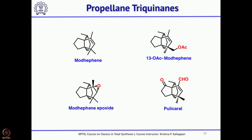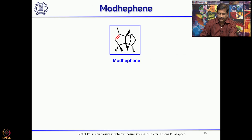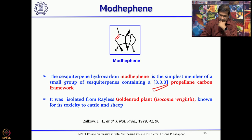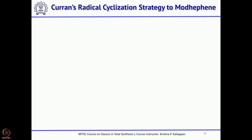Now, moving from linear and angular triquinanes, we go to propellane triquinanes — how propellane triquinanes can be synthesized using radical cyclization. Some propellane triquinanes include modhephane (the basic one) and oxygenated modhephanes such as 13-acetoxy modhephane, modhephane epoxide, and Pukeleimide. Modhephane can be described as a [3.3.3] propellane system — all three 3-carbon atoms are joined together at one point. It was isolated from the goldenrod plant and is well known for its toxicity to cattle and sheep.